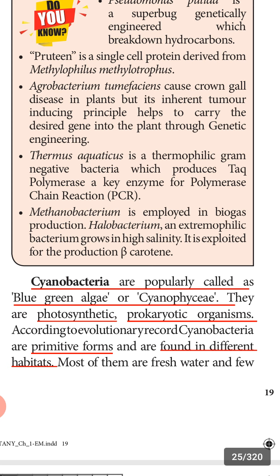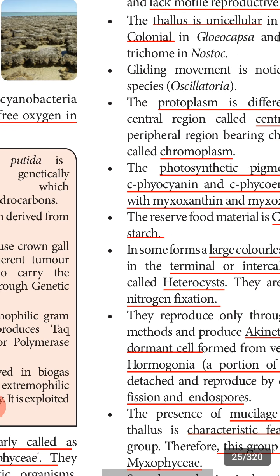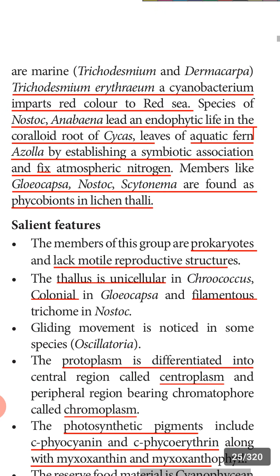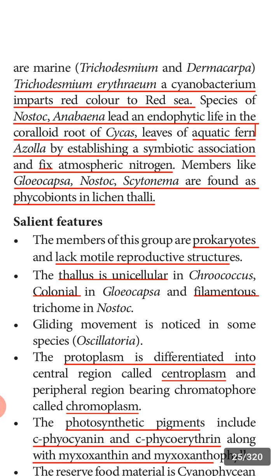According to evolutionary records, cyanobacteria are primitive forms of bacteria. They are found in different habitats like freshwater, and some are marine — like Trichodesmium and Dermacarpa. Trichodesmium erythraeum is a cyanobacterium that imparts red color to the Red Sea.